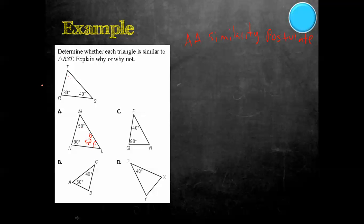That shows these two are not similar because we don't have two matching angles. Triangle RST needs a 40 somewhere — 80 plus 40 is 120, and 180 minus 120 is 60 degrees. Looking at the next triangle, we have 40 and 80, and RST also has 40 and 80 — those angles match by angle-angle. So triangle RST is similar to triangle QPR, writing the vertices in matching order: R corresponds to Q, S to P, T to R.